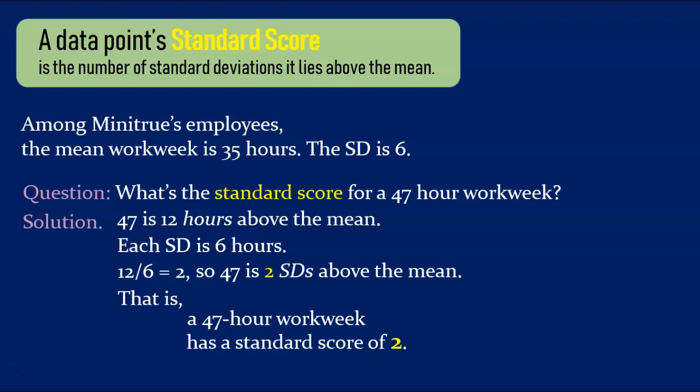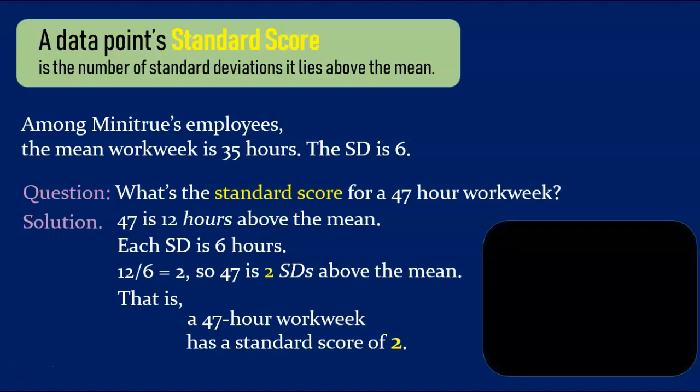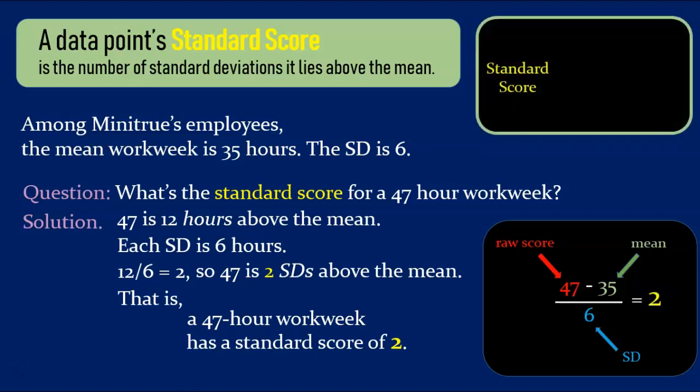Simple enough, but it's worth going through this again to capture the computational essence of standardizing. We started with a raw score of 47, then we subtracted off the mean, then we divided by the standard deviation. The result was our standard score. And this process will always work. To get any data point's standard score, we start with its raw score, subtract off the mean, and divide by the standard deviation.